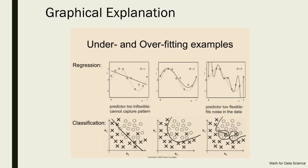These graphs show regression and classification examples of overfitting and underfitting. In the regression example, there are two lines: one resembling a sine curve and one a straight line. The straight line represents the underfitted curve because very few points are covered, while the sine curve tries to fit almost all the data points — that is the overfitting curve.